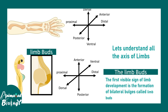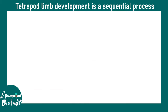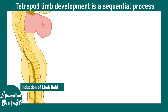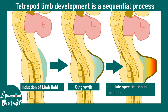The limb bud is the hero of this story because it is the first visible sign of limb development. The limb bud would eventually be patterned to create that extremely complicated structure. There are sequential processes: first there is induction of the limb field, then outgrowth of the limb bud, and then the spatially defined specification of the limb bud would eventually lead to specific regions of the tetrapod limb.